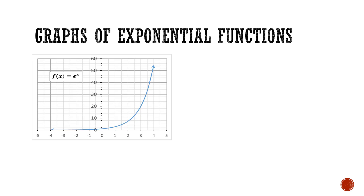There are some key points worth noting as we look at this function. When x is equal to 0, we have e to the power of 0, and that gives us 1, since anything to the power of 0 is equal to 1. When x is equal to 1, we have e to the power of 1, so we get the value of e, which is 2.718 and so on. From there, our e to the x values keep increasing.